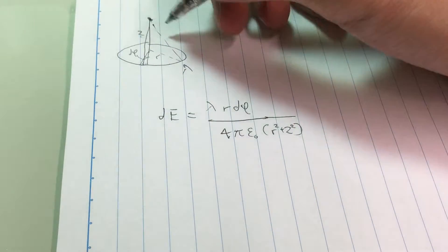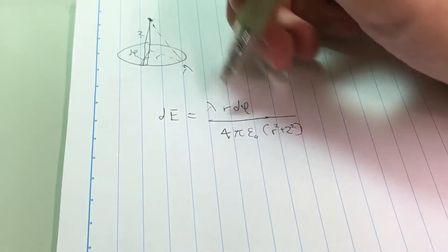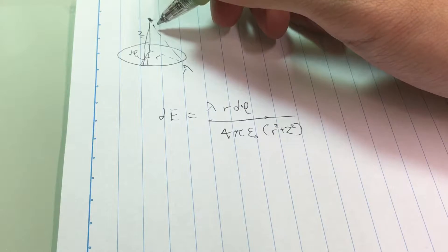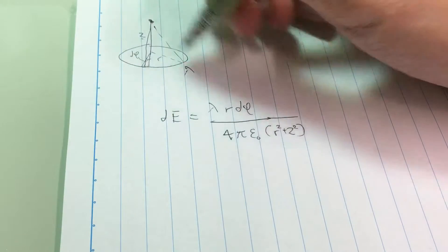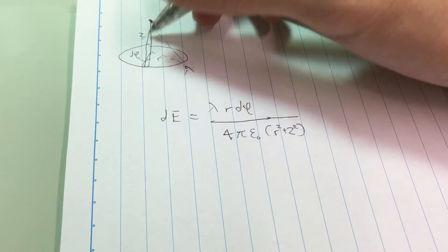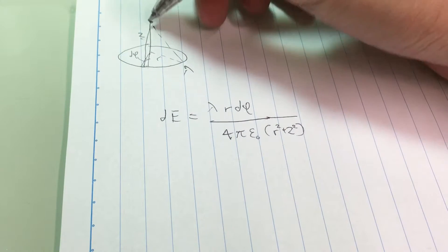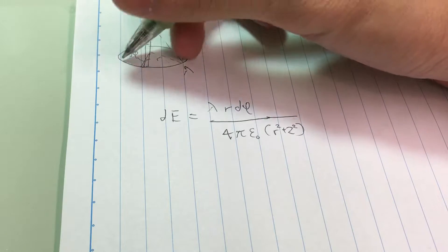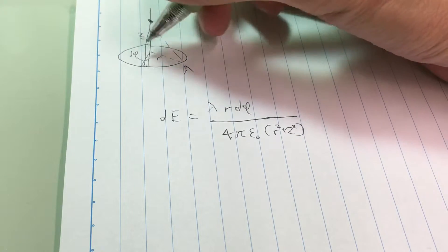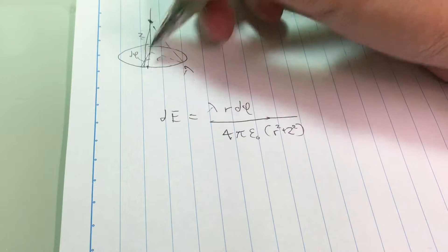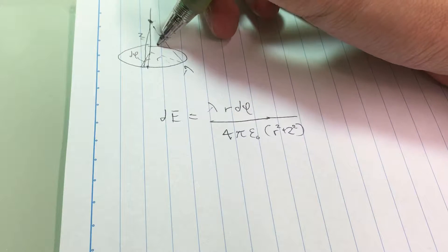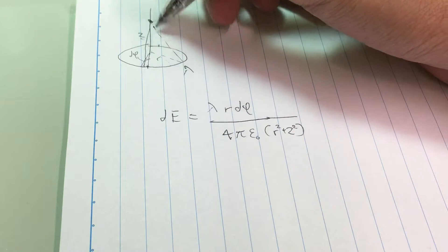There's one thing we shouldn't forget: this is a vector. So the horizontal components of all these fields coming from this hoop, they all cancel each other out. The horizontal component coming from this side is canceled out by the horizontal component coming from this side.